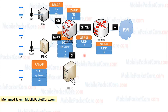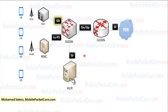This graph shows the interface name between every two network nodes. GB is the interface between the BSC and the SGSN. IUPS is the interface between the RNC and the SGSN.